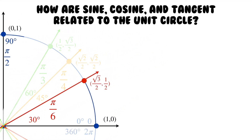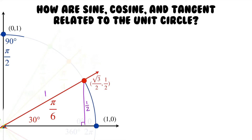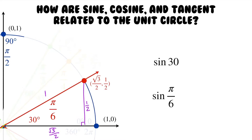More specifically, let's look at the 30 degree angle, or pi over 6. If you remember from last video, to find this point right here, we drew a triangle for this angle. The hypotenuse is 1 because it's the radius of the circle, this leg right here is one half, and this leg right here is root 3 over 2. So if we want to find the sine of this 30 degree angle, or pi over 6 in radians, from SOHCAHTOA we know that sine is opposite over hypotenuse. The leg opposite this 30 degree angle is one half, and our hypotenuse is 1, so the sine is one half over one, which is just one half.